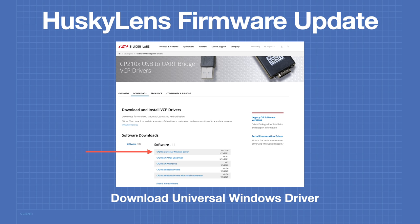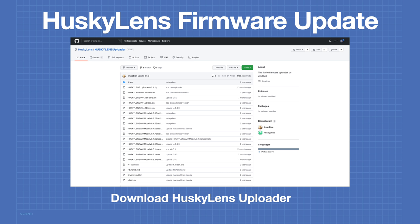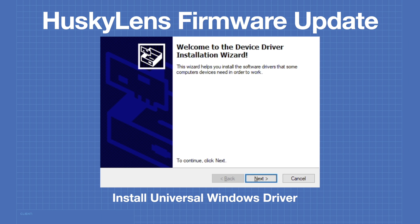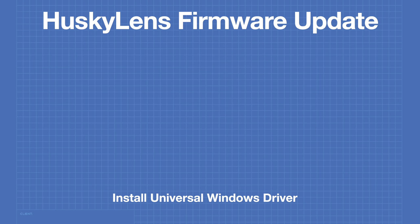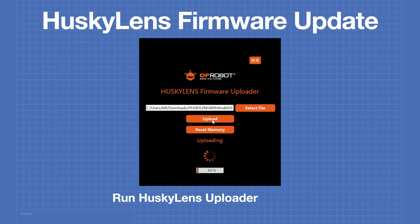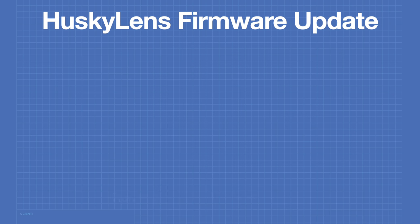To update the firmware, download a Universal Windows driver from Silicon Labs, then go to the Husky Lens GitHub page and download the Husky Lens Uploader for Windows and the latest Huskyware firmware. Install the Universal Windows driver, connect the Husky Lens via micro USB, and verify it appears in Device Manager as a Silicon Labs device. Run the uploader, select the new firmware file, and click upload. It will cycle between 0 and 100% several times and the whole procedure takes about five minutes.